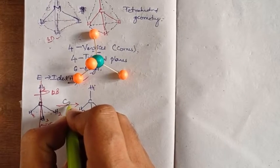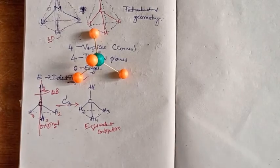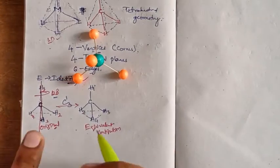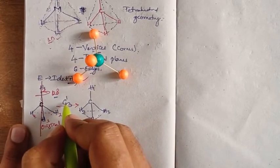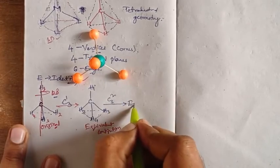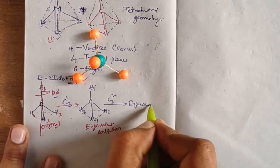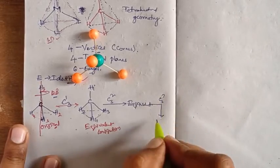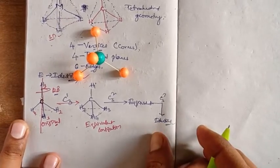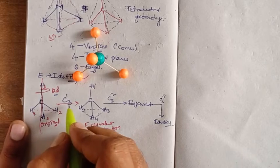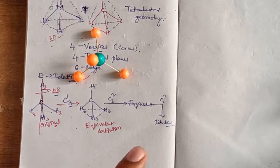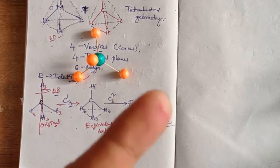Performing C3 rotation a second time generates another equivalent configuration (C3²), and a third time generates the identical configuration. So there is a C3 rotational axis in the tetrahedral molecule. But is C3 the only one, or are there more?